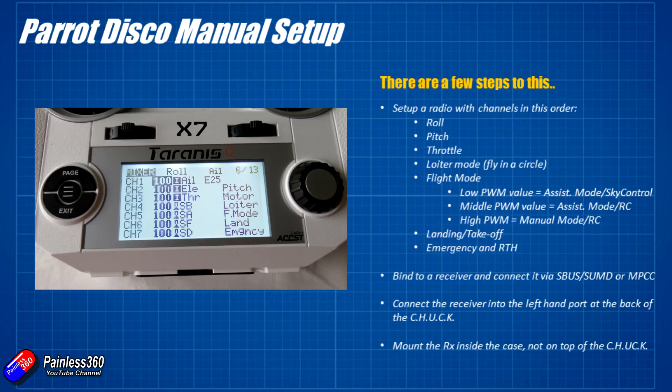If the switch is in the middle value around 1500 microseconds, it's assisted mode but allows you to fly via radio control. In the high position towards 2000 microseconds, it gives you manual mode, also with the radio control. I would recommend adding an extra two channels: one for initiating landing and takeoff, one for emergency, and one for return to home — which I consider the same thing, but I put them right next to each other so I can catch one or the other if I have a problem.